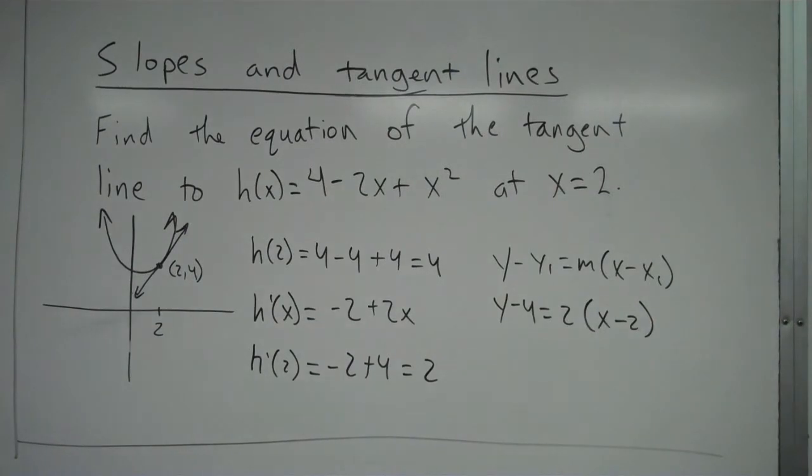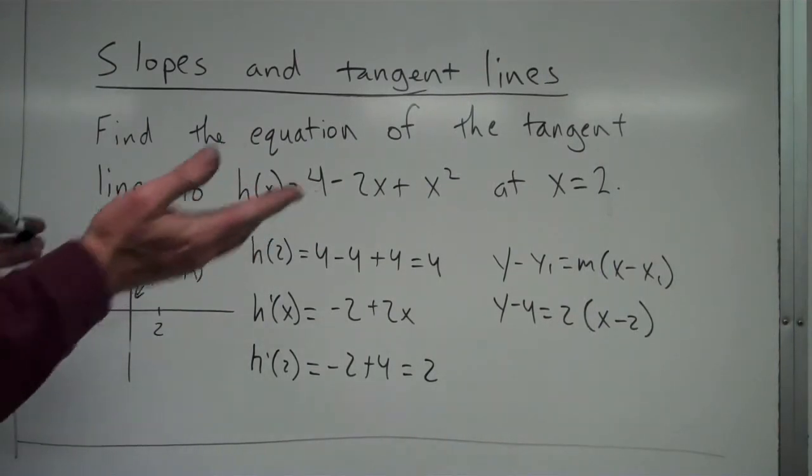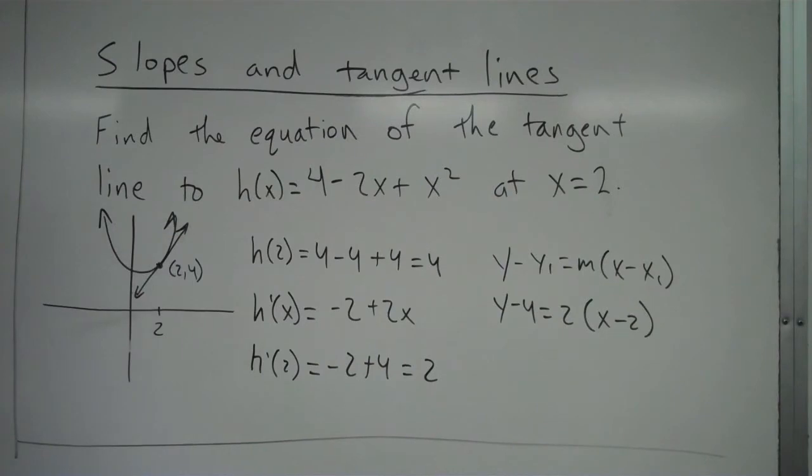It's in point-slope form. If you have a multiple-choice question and you notice the forms are like slope-intercept form, you'd have to change it now. But if this is a free-response question, there's no problem leaving it just like that.